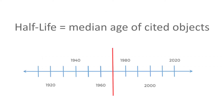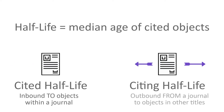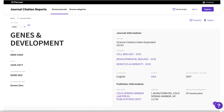A half-life in the context of the JCR is the median age of cited objects. Those can be citations made to items within a journal, or citations made from a journal to others. JCR shows you the details of this inbound and outbound citation traffic in each profile page.